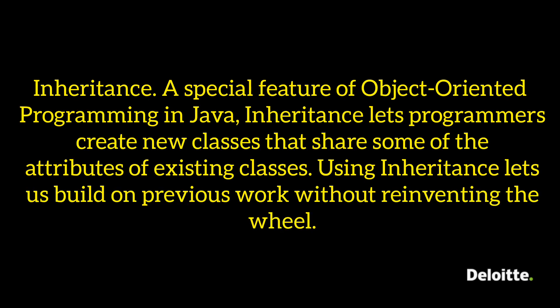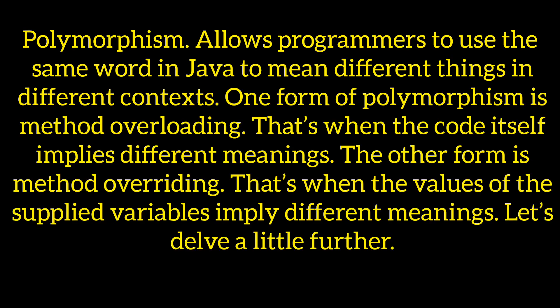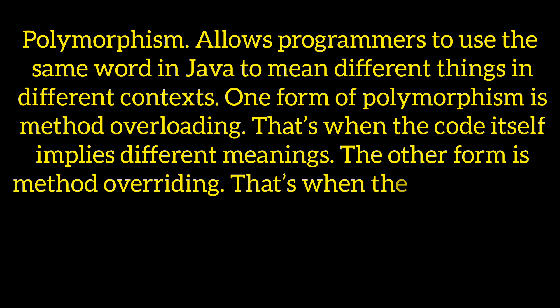Inheritance is a special feature of object-oriented programming in Java. It lets programmers create new classes that share some attributes of existing classes. Using inheritance lets us build on previous work without reinventing the wheel. Polymorphism allows programmers to use the same word in Java to mean different things in different contexts — for example, method overloading.